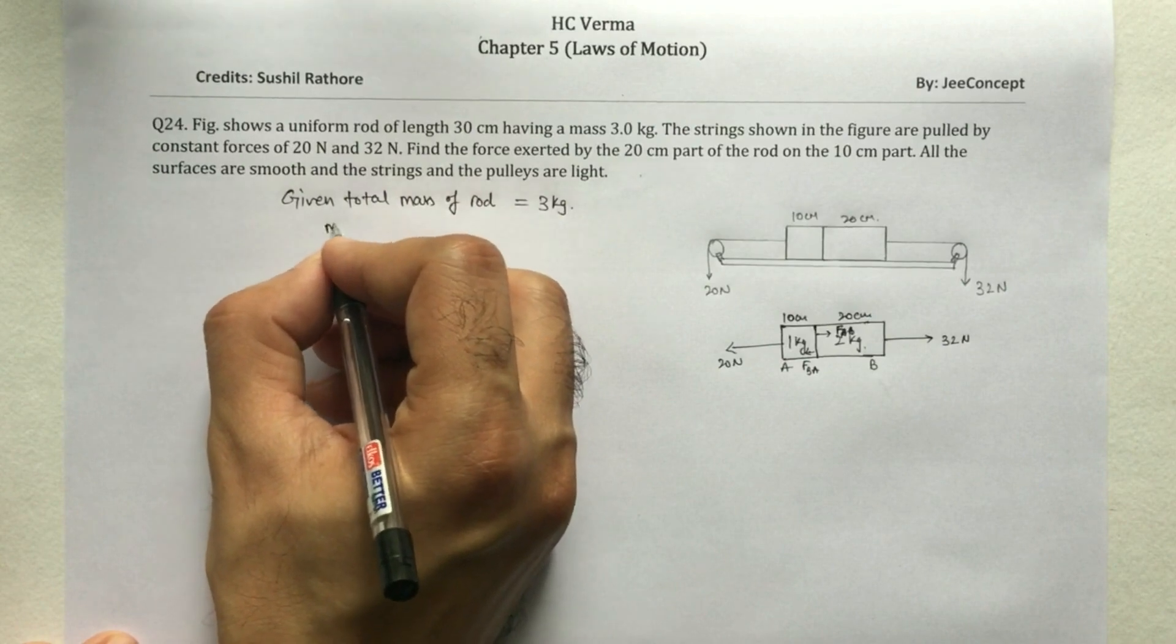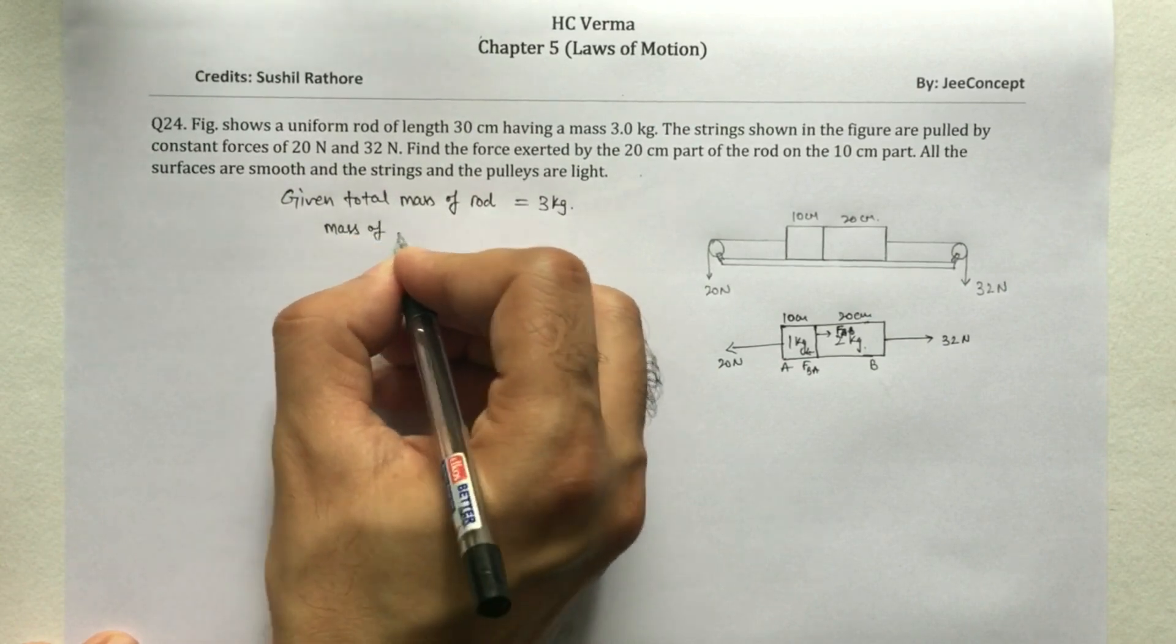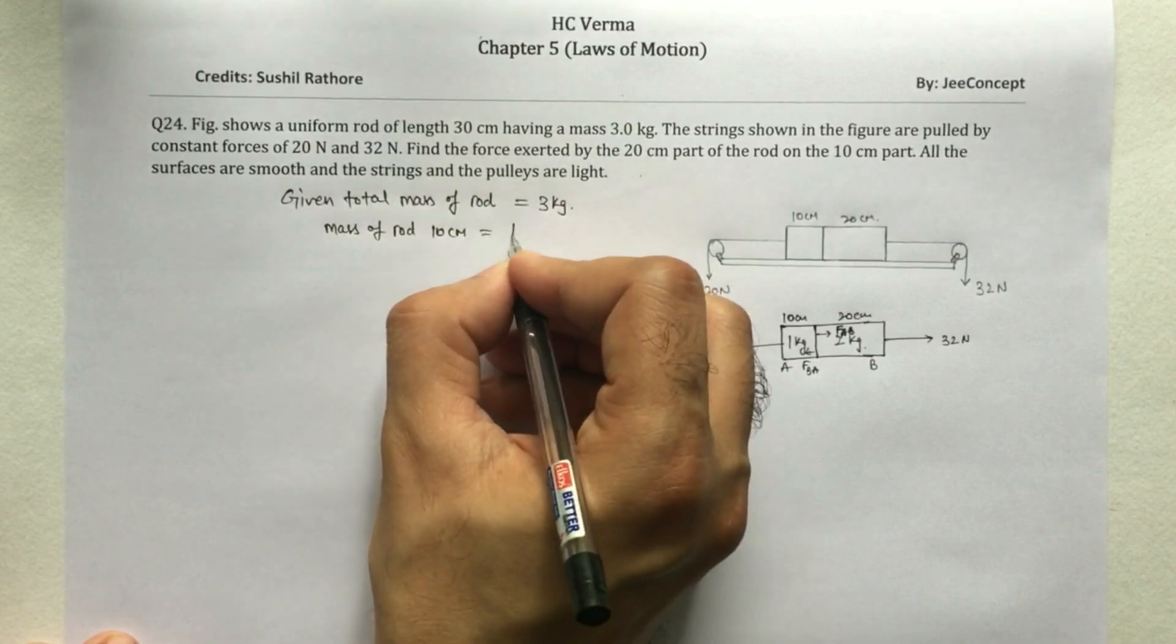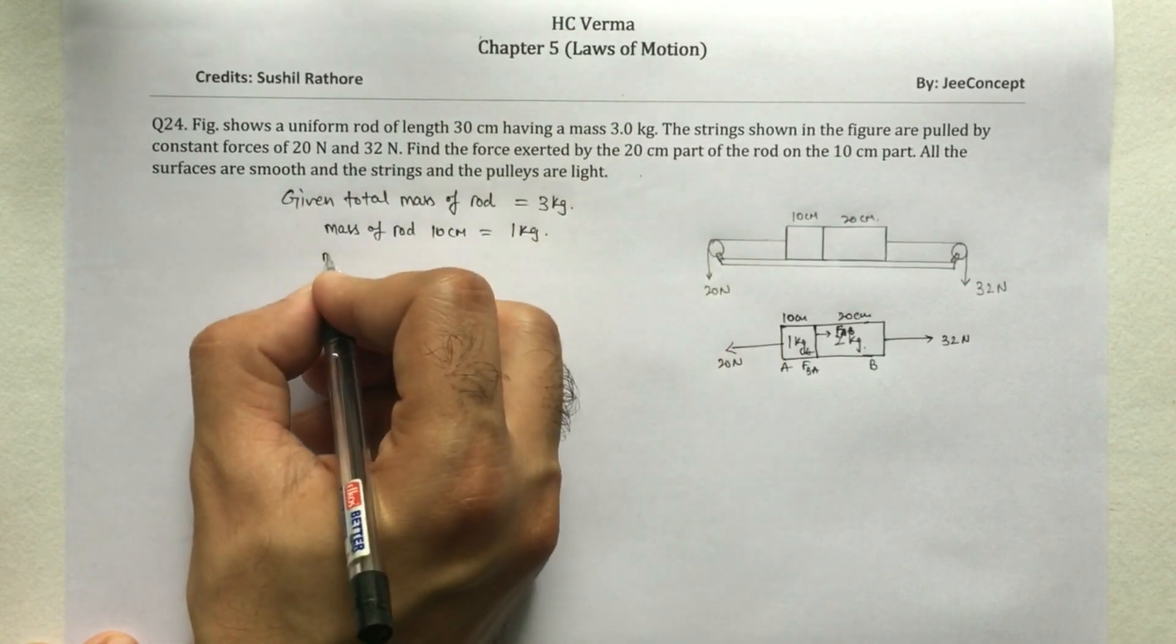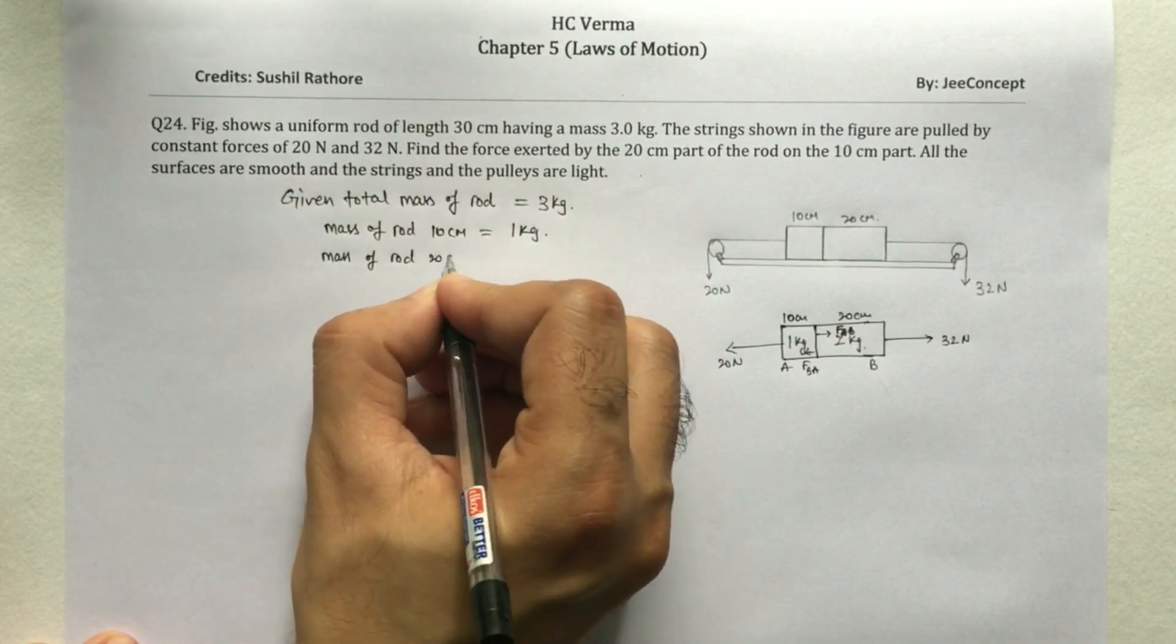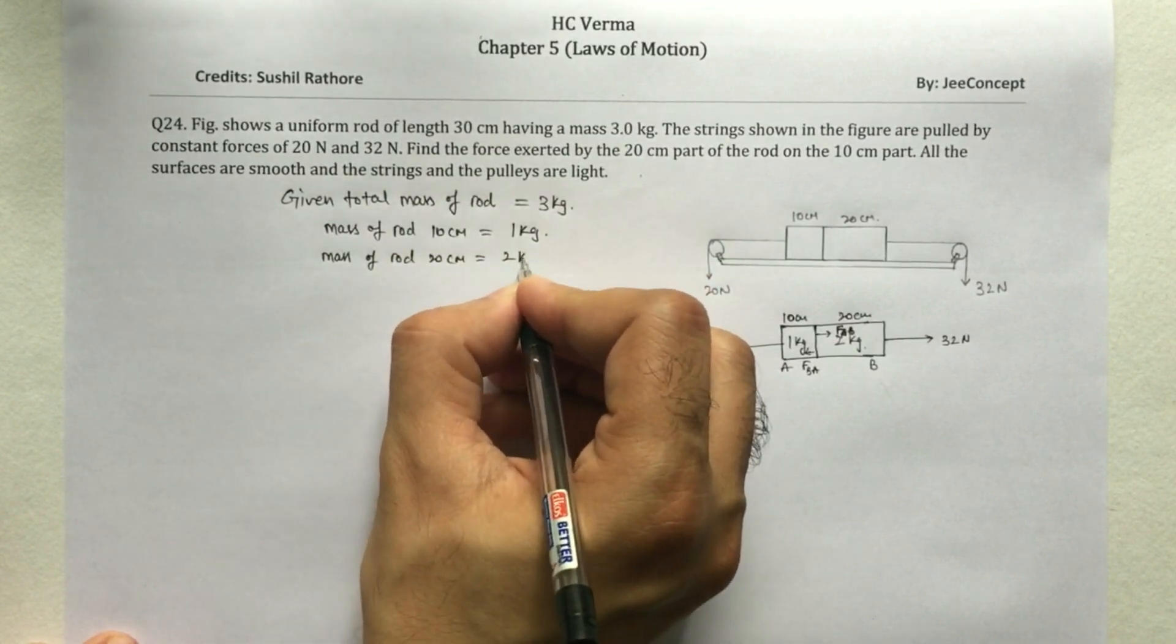So that means mass of rod 10 cm is going to be 1 kg and mass of rod 20 cm is 2 kg.